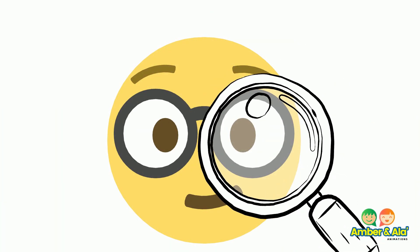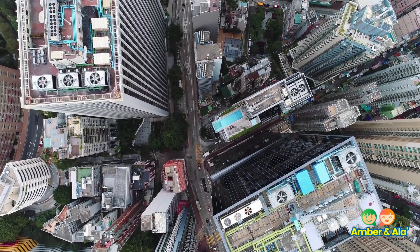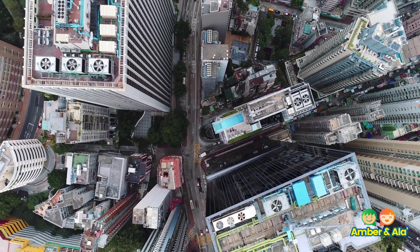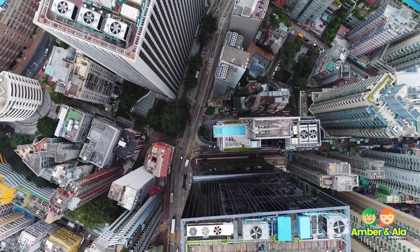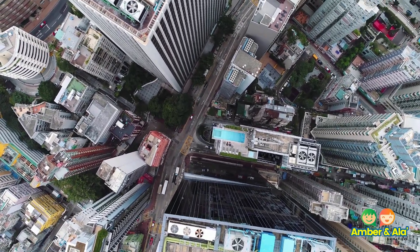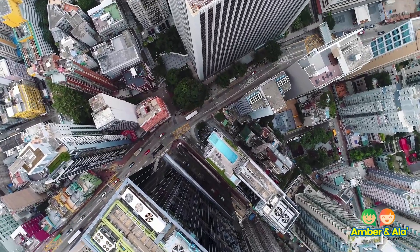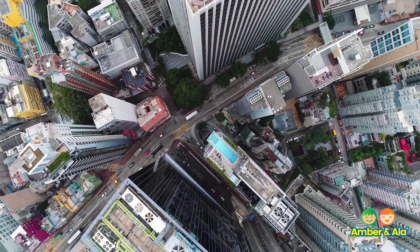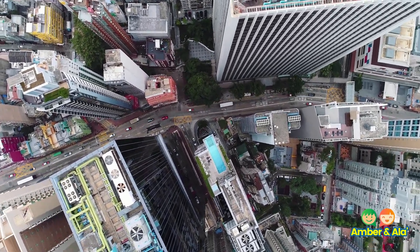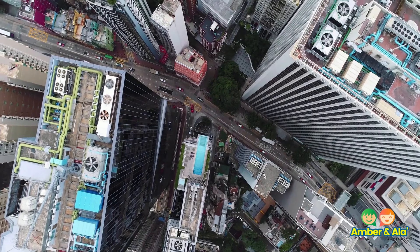Now let's try to find some non-living things. I am looking from a bird's eye view, and I see some things moving. This is a city. These things moving must be cars, but the cars are not living things. Yes, cars do move, but they don't breathe and grow, so they are not living things. The buildings are not living things as well.